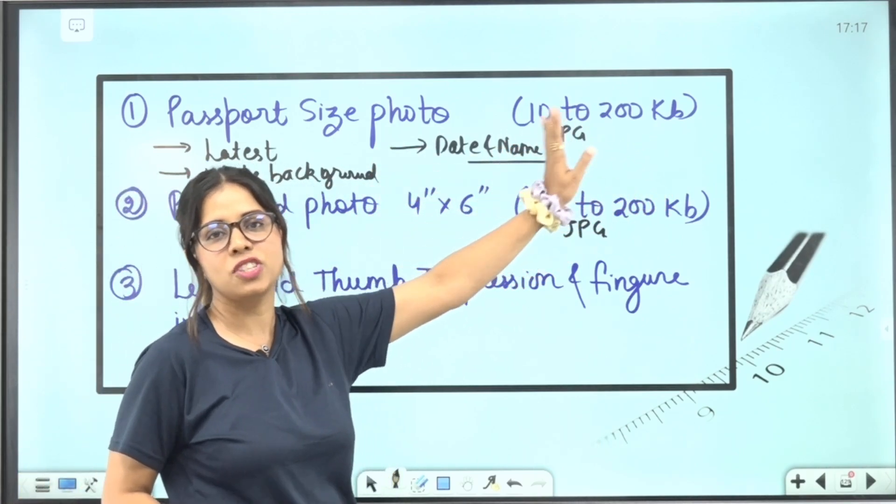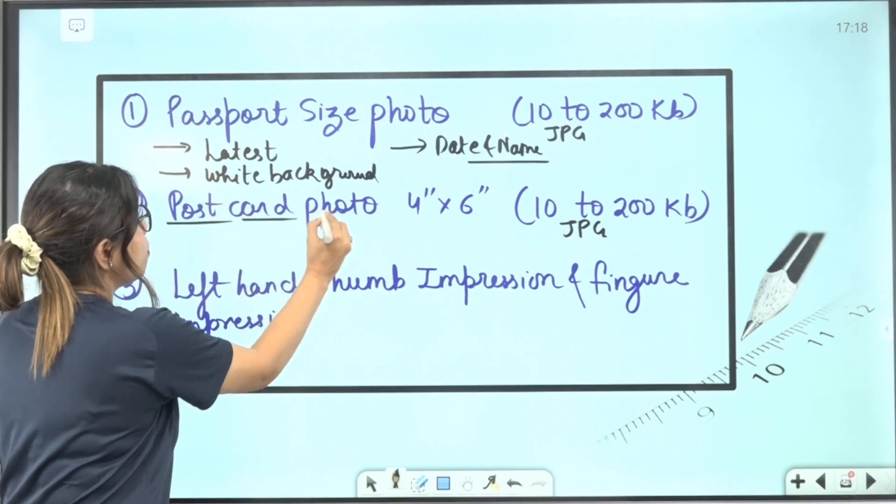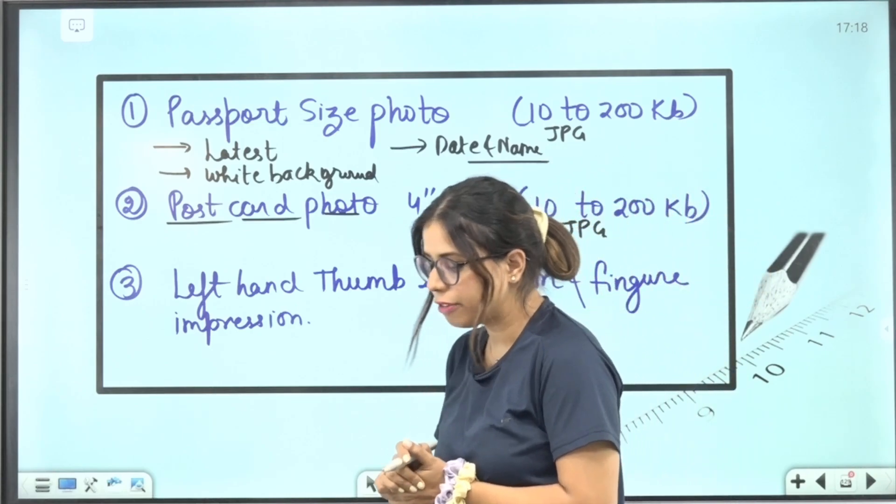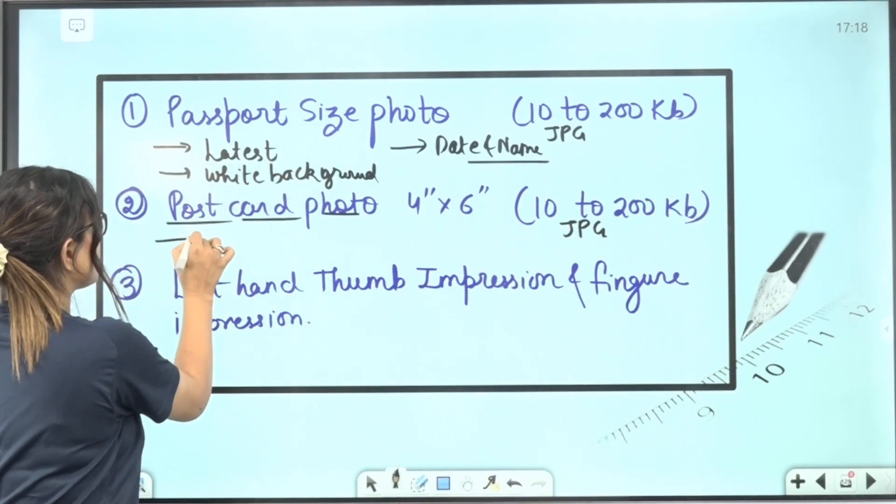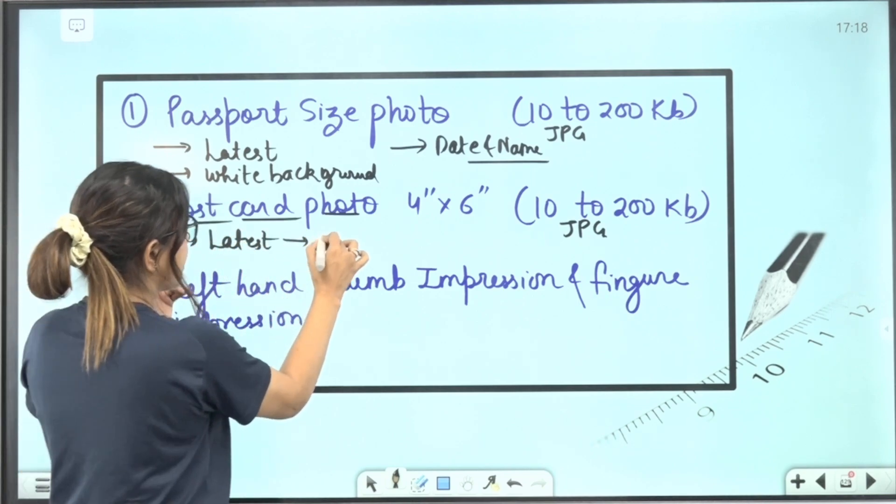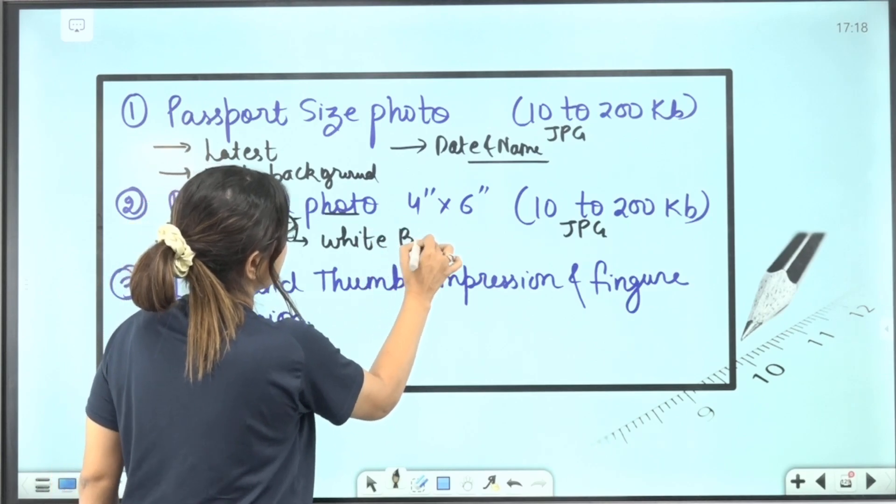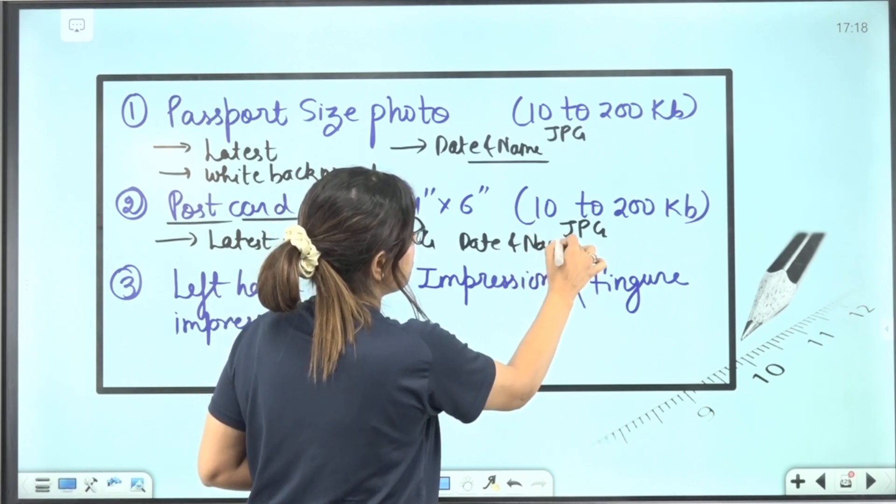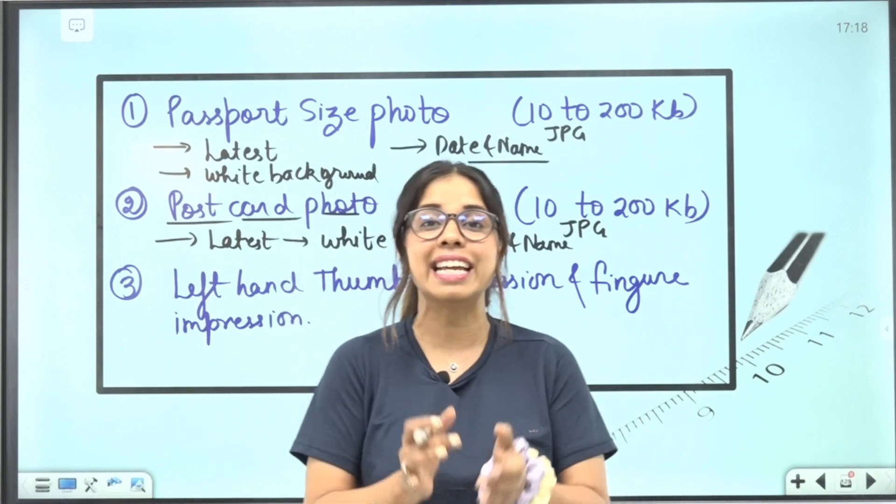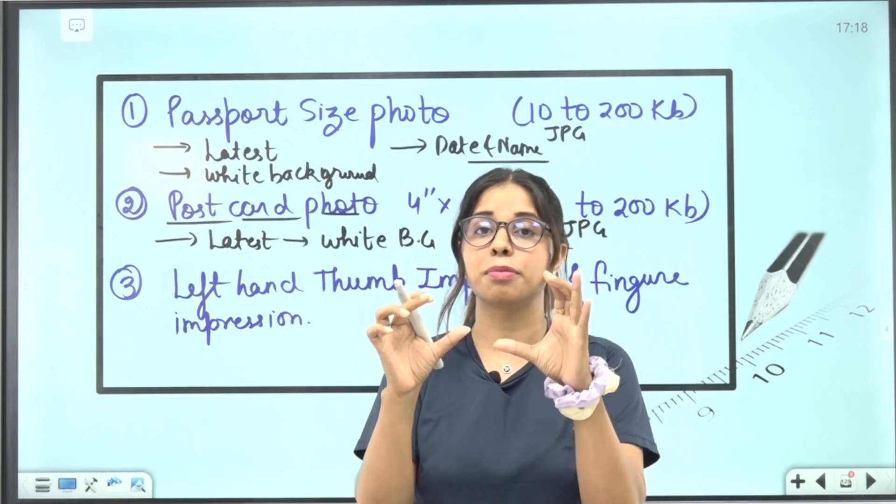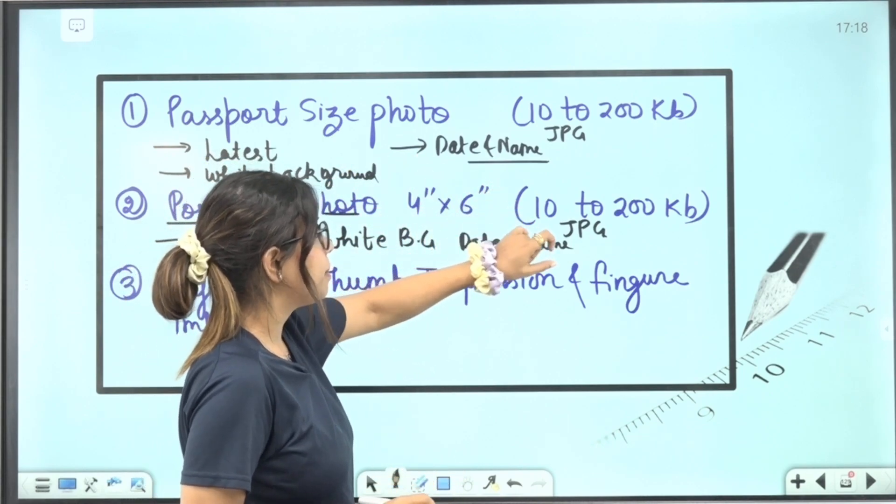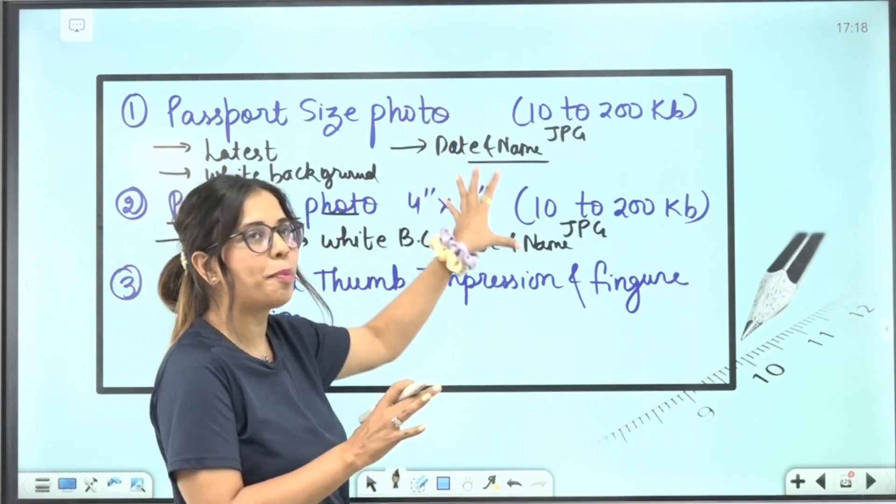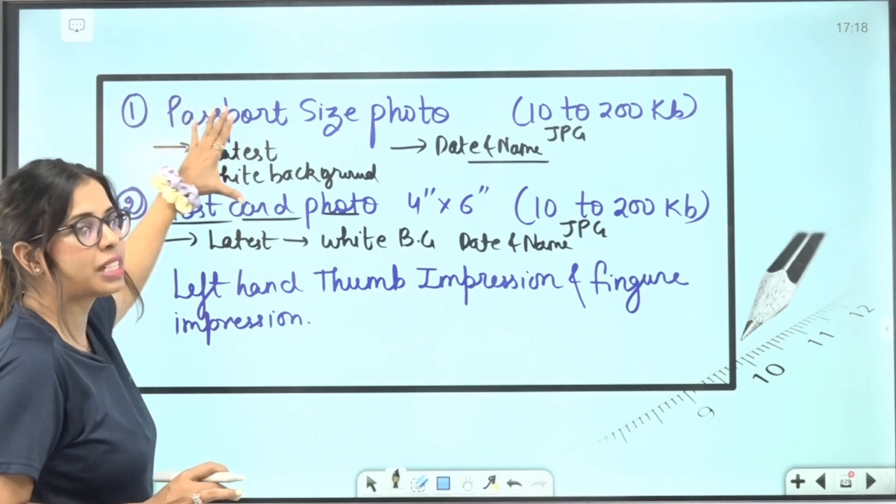The second is postcard photo. Postcard size will need a photograph of 4 by 6. You will need to do this too. This is your latest instruction, you need to be a white background and on it is also the date, the day this photo is posted and you have to mention the name. The date is written, the day you have clicked the photo. And when you upload this size, you need to be in between 10 to 200 KB. You need to be ready these documents. These are both 100% compulsory documents.